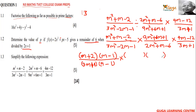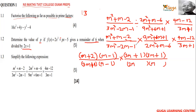For 9m² + 6m + 1: factors of 9m² give 3m and 3m; factors of 1 give 1 and 1. Since everything is plus, everything stays plus: (3m + 1)(3m + 1). For 2m² + m − 6: factors of 2m² give 2m and m, and factors of 6 are 3 and 2, giving a negative and plus arrangement.